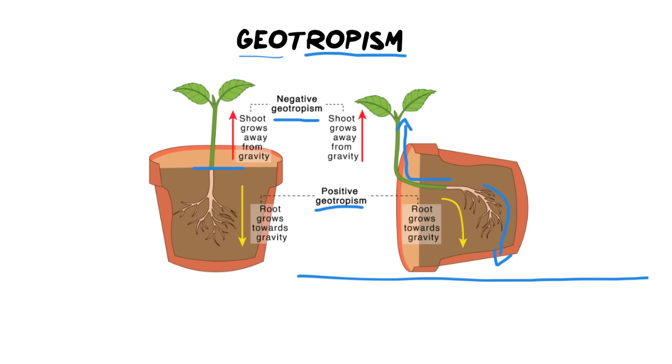Now what's governing this is geotropism. An important note I want to make now is geotropism works in the opposite to phototropism when it comes to auxins. You'll see now what I mean by that when I explain how it actually works.